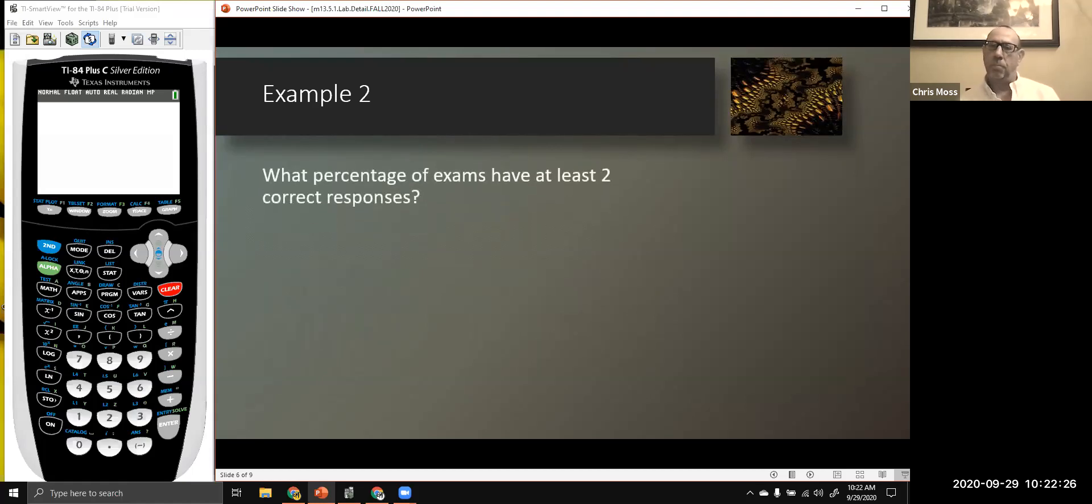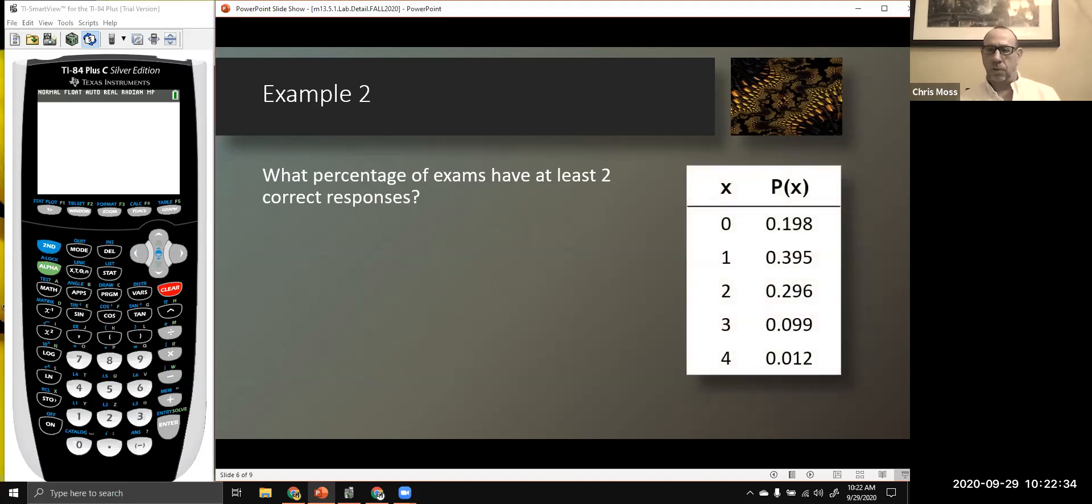So here's our first question. What percentage of the exams have at least two correct responses? The first issue is, we don't really have percentages at all. We've got decimal values. I can convert percentages by moving that decimal two places to the right. So not a hard conversion to make. So that's the percentages. What percentage of the exams have at least two correct responses? At least two means two or more.